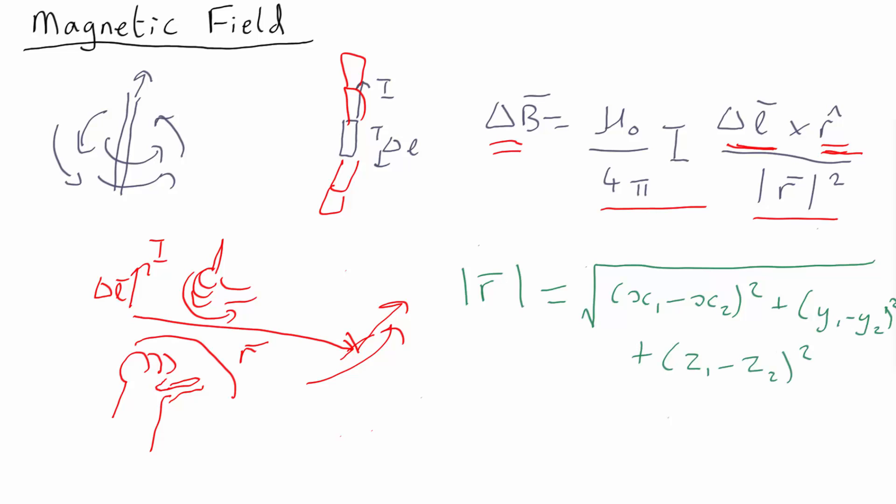We also know that the unit vector in this direction, R hat is just the total vector in that direction, divided by the length of the total vector, as before.